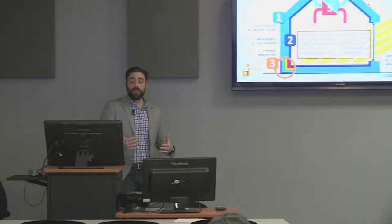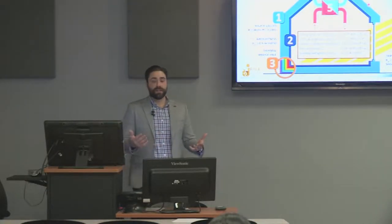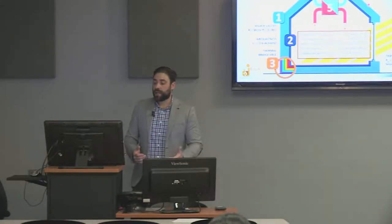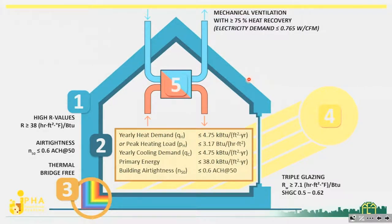If you do everything right, you'll hit the Passive House standard targets. We're looking at 4.75 kBTU per square foot per year for our heating demand and our cooling demand, a primary energy demand of 38 kBTU per square foot per year, and a building air tightness of 0.6 ACH at 50 pascals.